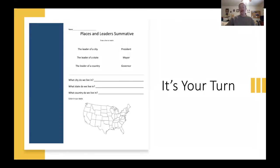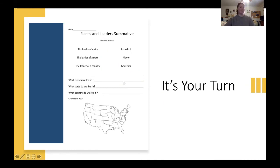Here is what your test — your summative assignment — is going to look like on Seesaw. At the top you have: leader of a city, leader of a state, leader of a country. You need to draw a line over to the correct leader on this side — president, mayor, or governor — and tell me which is which. Then you have three questions: What city do we live in? What state do we live in? And what country do we live in? Make sure you write or type each answer.